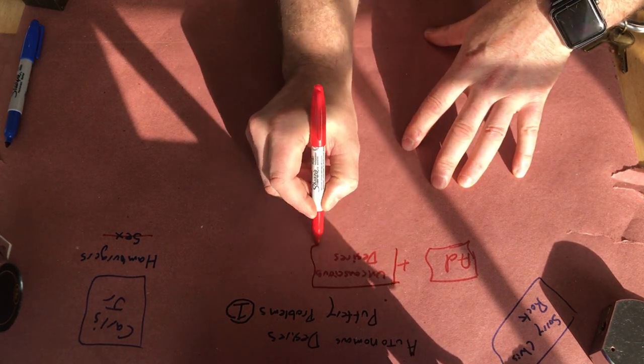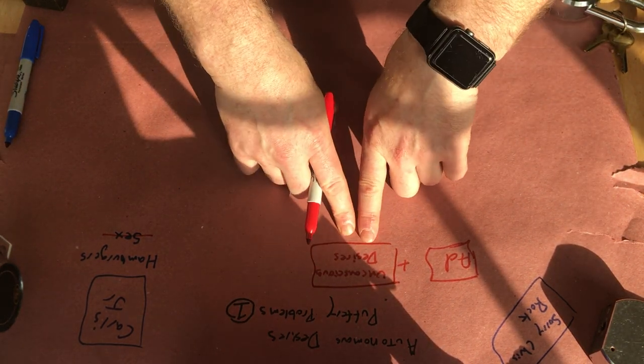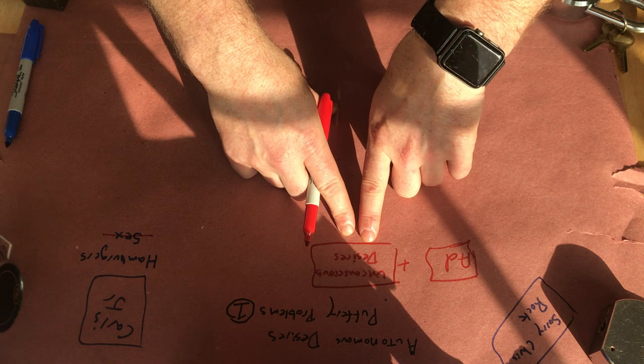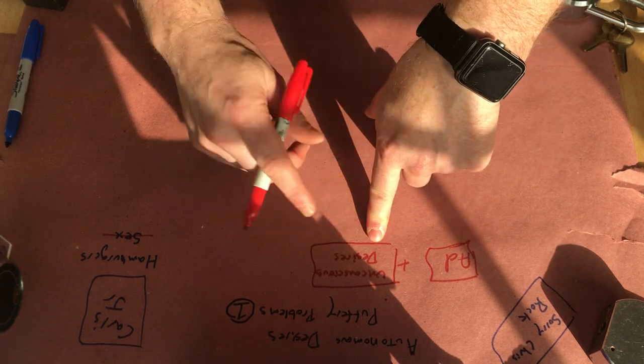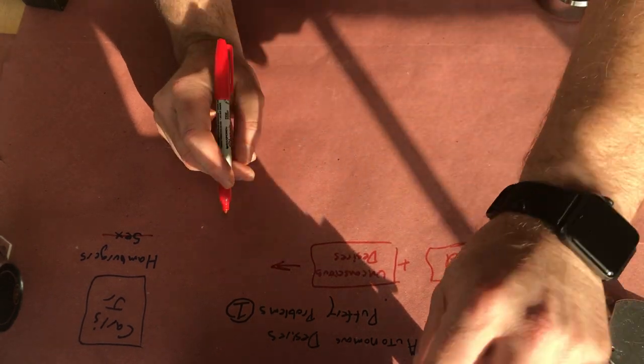So the picture is that we have these unconscious desires for things like sex, power, status, things like that. And the ad appeals to those and gives us the desire to buy the product.